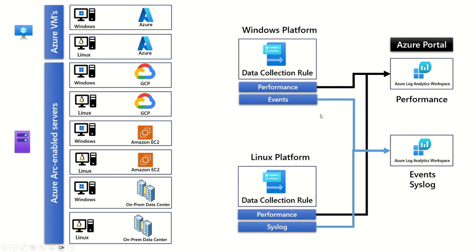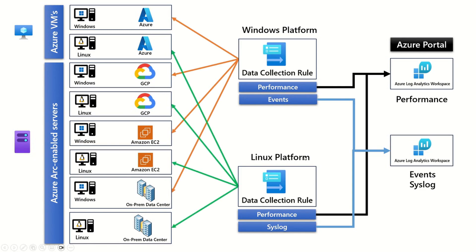The DCR created for Windows will be applied to all Windows machines, and the DCR created for the Linux platform will get applied to all Linux machines across your enterprise. If a Windows machine tries to send performance logs it will go to the first workspace; however, if it tries to send event logs it will go to the second workspace. For the Linux machine in your on-premises environment, performance data goes to the first workspace and syslog data goes to the second workspace.